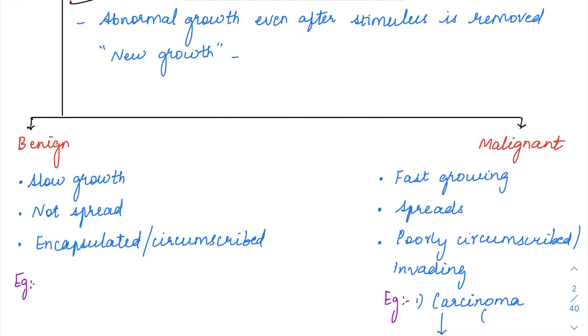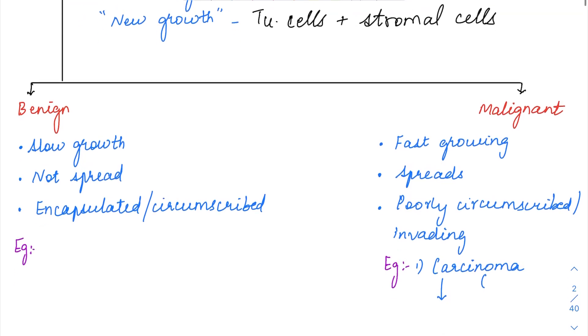This new growth, the tumor mass, is going to be composed of both the tumor cells along with some stromal cells. Do not think the stromal cells are unimportant. It is actually the stromal cells, the environment which is provided by them, which help in the growth of the tumors. Tumor cells along with stromal cells complete the tumor mass.